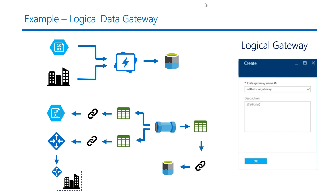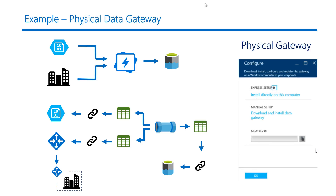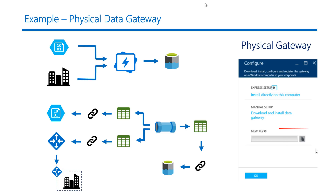Since we are connecting to an on-premise data store, we need to point to a logical gateway that the linked service refers to. The logical gateway is defined within the Azure Data Factory UI. Once we define the logical gateway, we need to download and install the physical gateway on the server where SQL Server is hosted, and register it with the key shown in the UI. It is the physical gateway that will ultimately pull the customer data from SQL Server to Azure Data Lake Store.